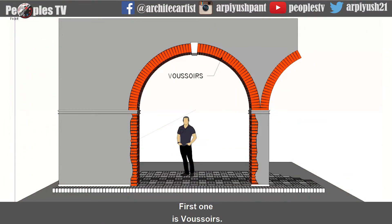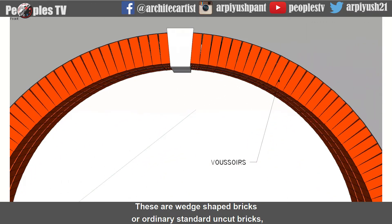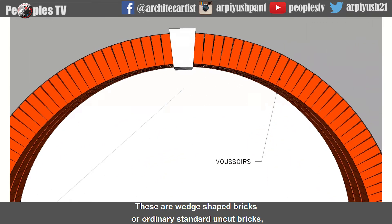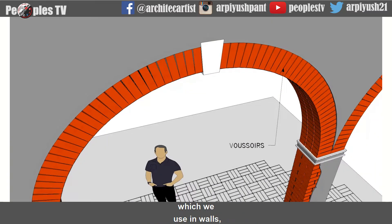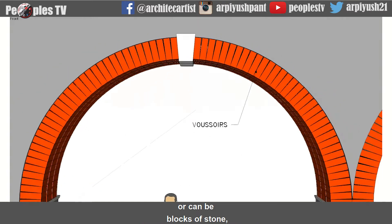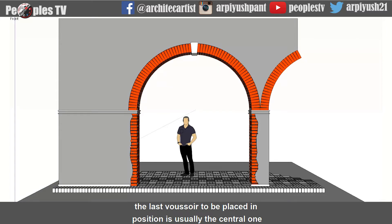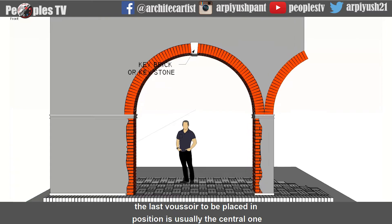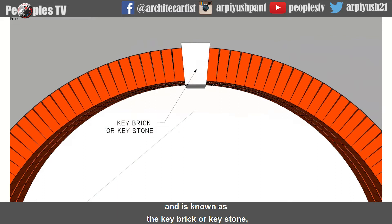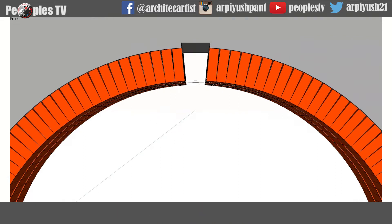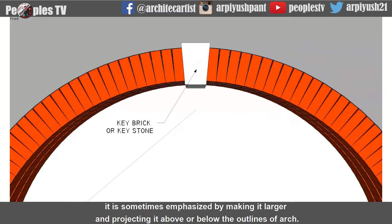The first term is voussoirs. These are wedge-shaped bricks or ordinary standard uncut bricks used in walls, or can be blocks of stone which comprise an arch. The last voussoir placed in position is usually the center one and is known as the key brick or keystone. It is sometimes emphasized by making it larger and projecting it above or below the outlines of the arch.